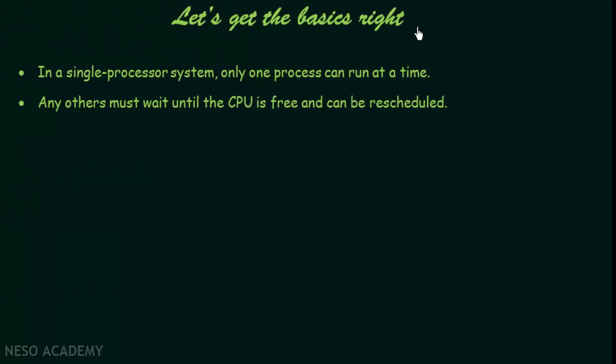Coming to the basics, let's talk about single processor systems and multiprocessor systems, which we have already studied. In a single processor system, there is only one processor, and only one single process can run at a time. Any other processes must wait until the CPU is freed and can be rescheduled — when one process is running, we must wait until it completes before another process can be given the CPU.